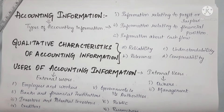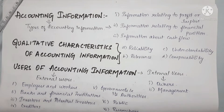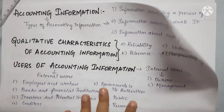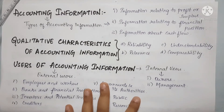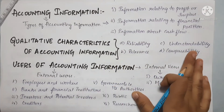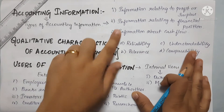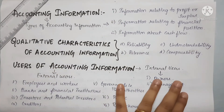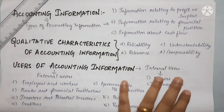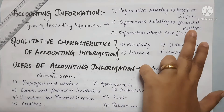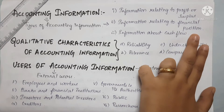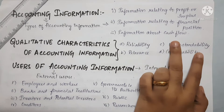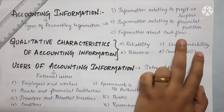Accounting is where bookkeeping ends. Bookkeeping is the accounting process. Next, we will talk about the types of accounting information. There are three types: information related to profit or surplus, information related to financial position, and information about cash flow.